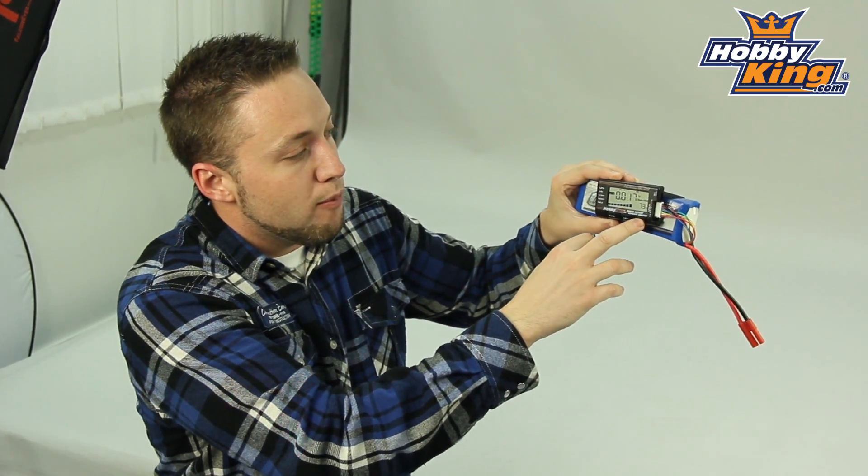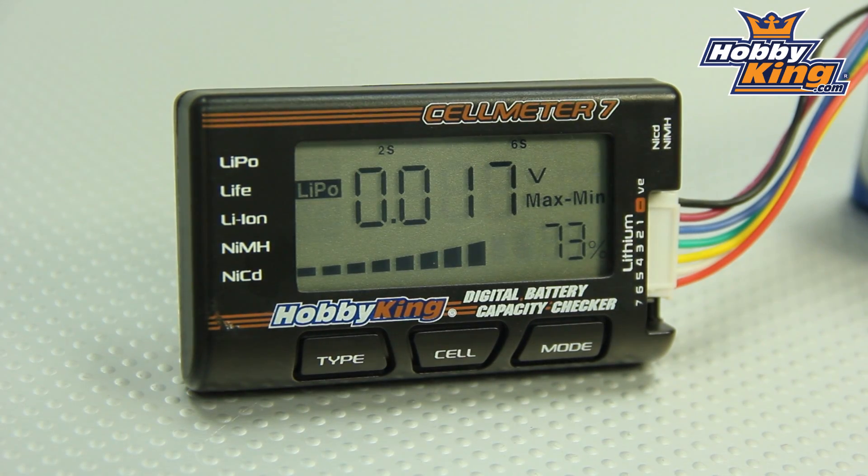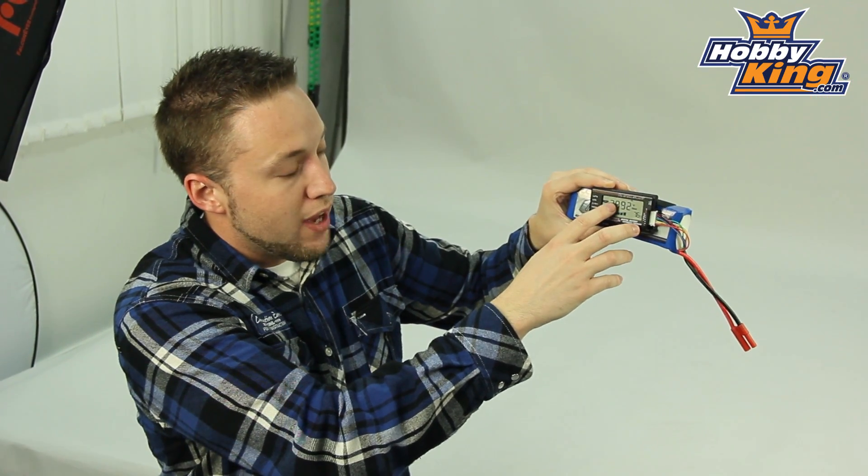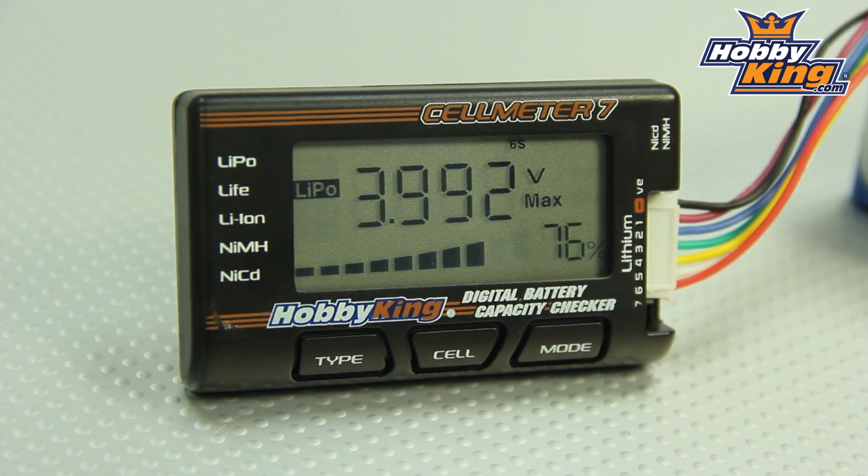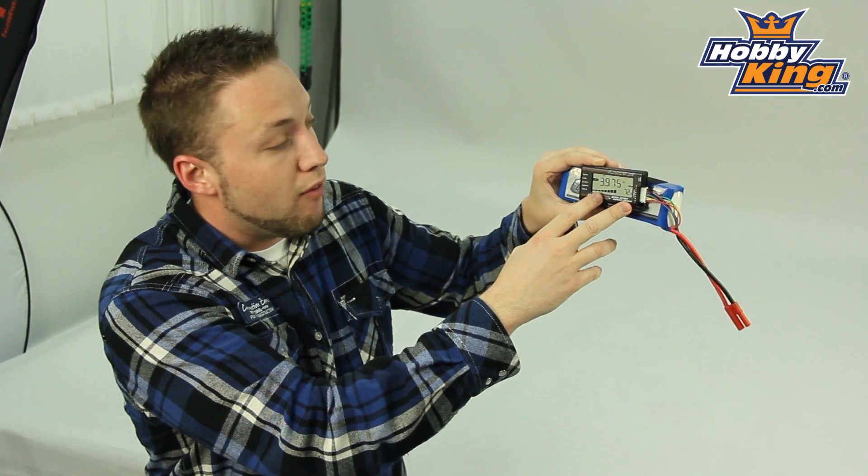Also you have additional modes on this. You switch through. This will tell you your max and minimum voltage of the pack. So it'll give you your highest and lowest cells. We have here your maximum cell. The highest cell currently is 3.992 volts. And then your minimum is 3.975.